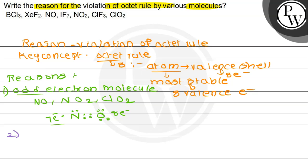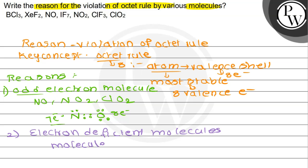Coming to the second reason: electron deficient molecules. This is the second violation rule. That means the compounds or molecules are having less than 8 electrons around the atom in the molecule. For example, the most common example is BeCl2 — around the beryllium, only 4 electrons are present, so it is electron deficient. Similarly, BCl3.